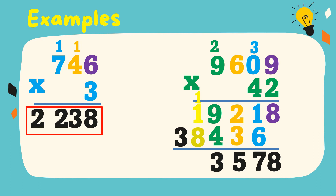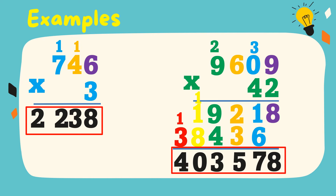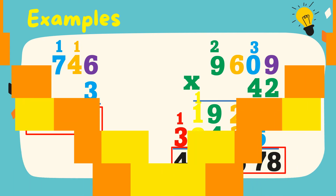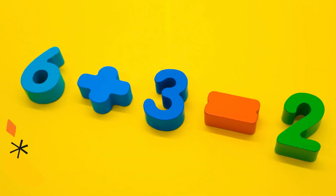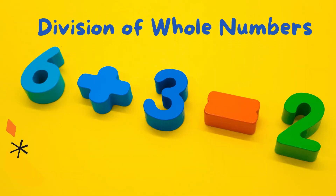1 plus 3 is equal to 4. Therefore, the product is 403,578. The last but not the least is division of whole numbers.